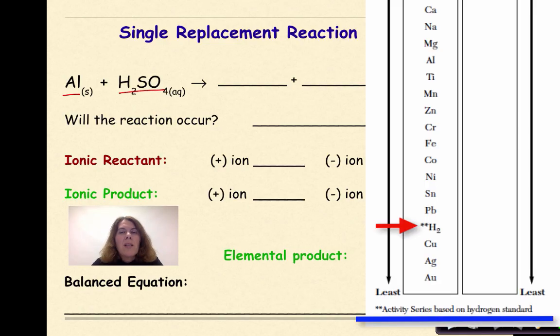Hydrogen is known as the standard by which all reactivities of metals is based upon. So hydrogen, even though it is a non-metal, is in the metals column. So we treat it like another metal in terms of activity. So can aluminum replace hydrogen? Yes it can.